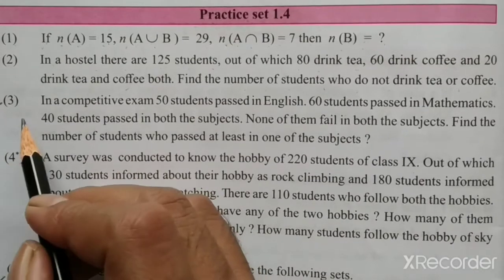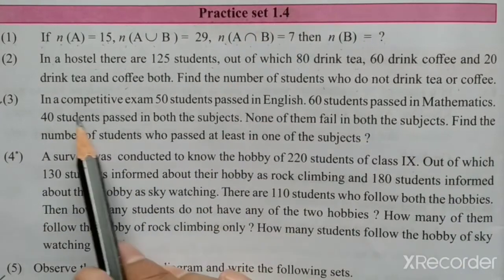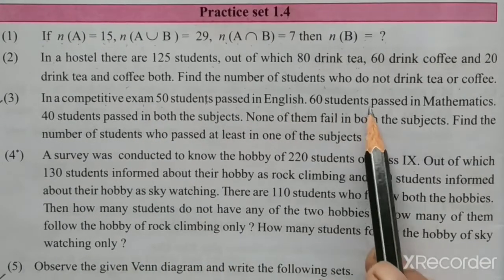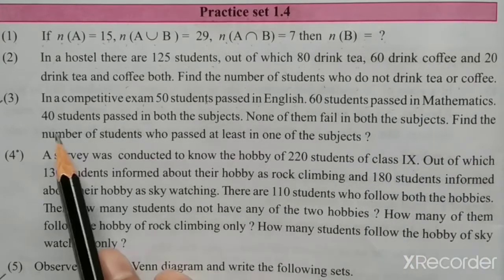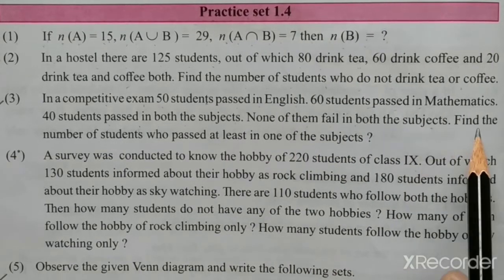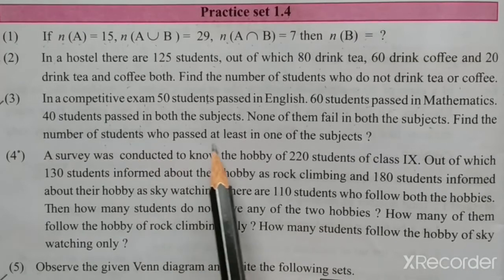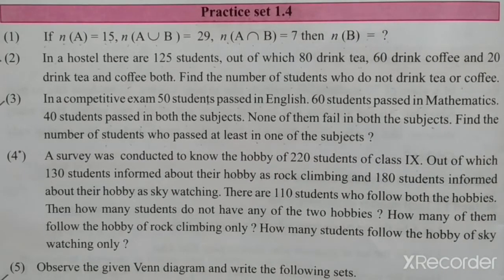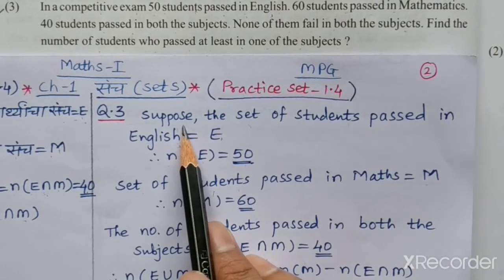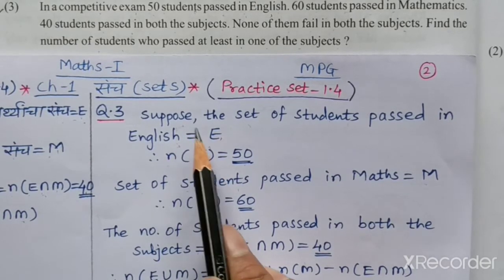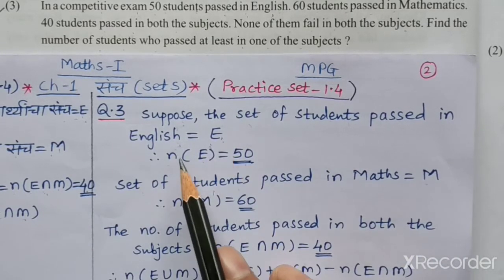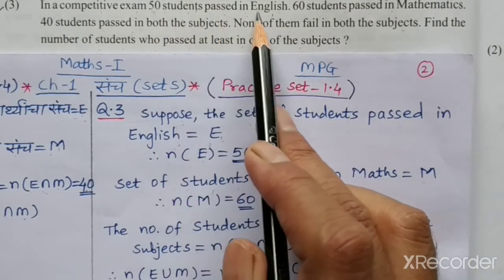Now question 3 from practice set 1.4. In a competitive exam, 50 students passed in English, 60 students passed in mathematics, 40 students passed in both subjects, and none failed in both subjects. Find the number of students who passed in at least one subject. Let E be the set of students passed in English, so n(E) = 50.